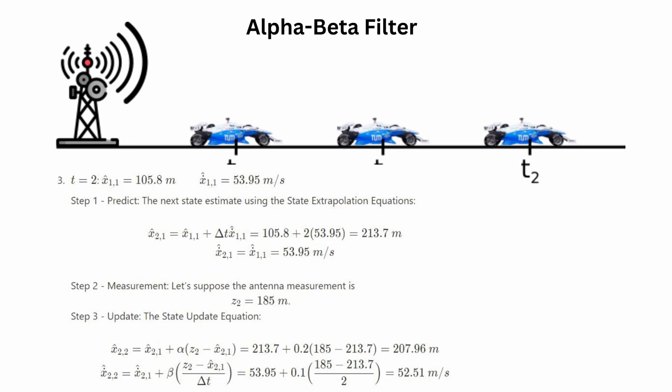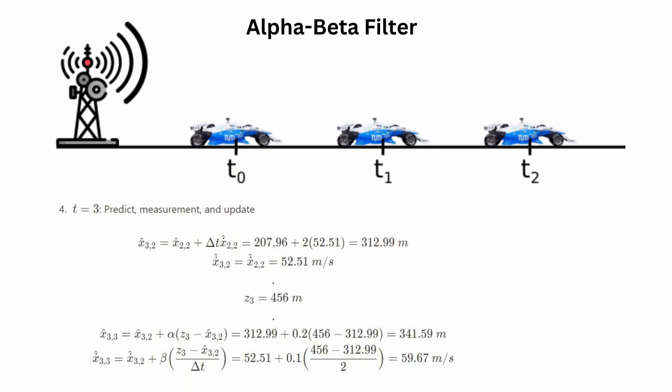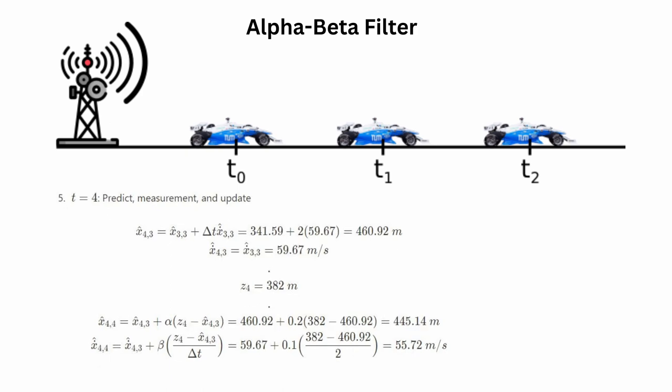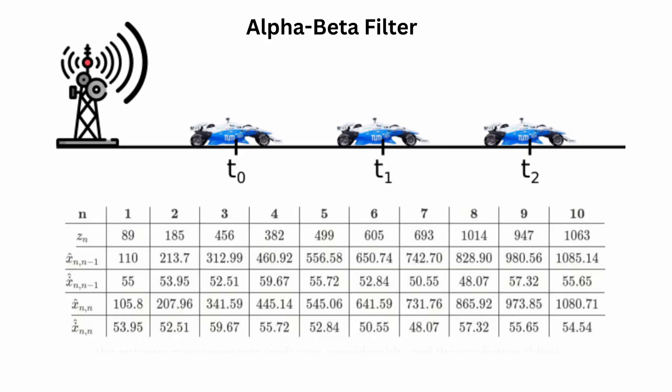We keep doing this again and again for different time steps — it's a recursive process. At time instance 3, and then 4, and so on. These are the final numbers based on all the calculations. If you want to verify, you can calculate for all time instances yourself, or look at the blog which has everything covered. Based on this chart, we have an estimate of position and velocity for each time instance.